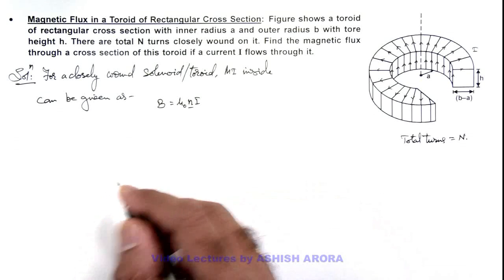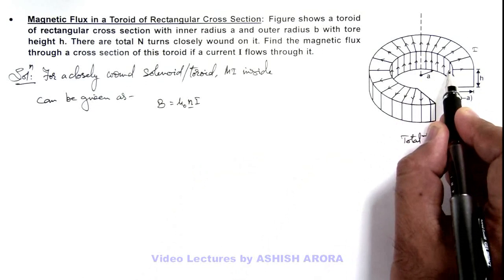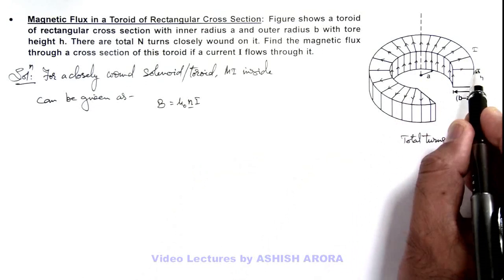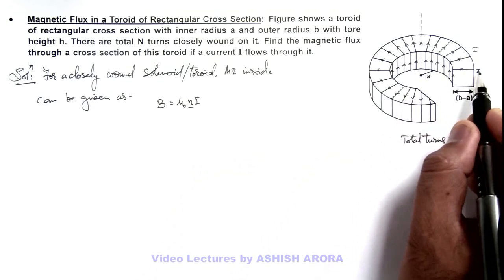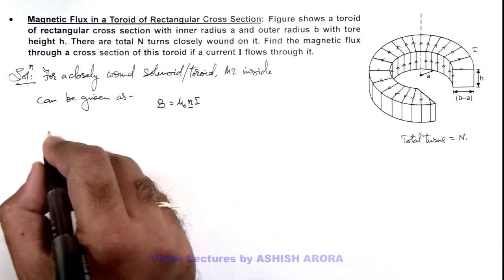Now in this situation we can see on the inner edge of this toroid, turns are closer, and at the outer edge due to its large length, the turns are relatively wider or largely spaced.